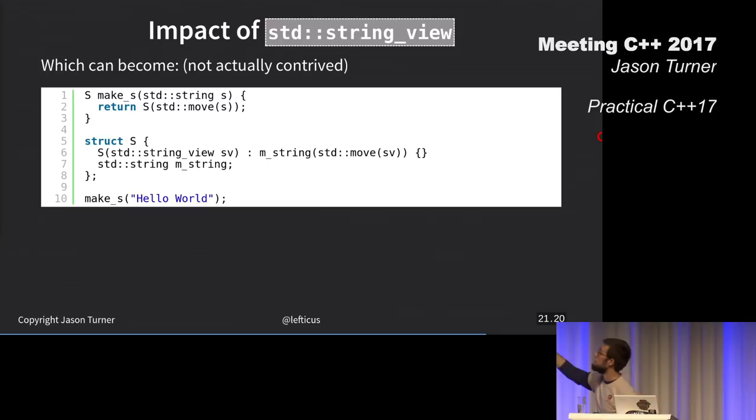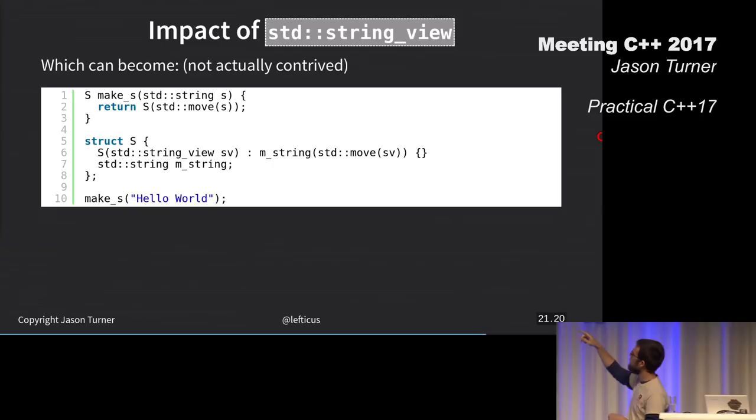Don't do this. I have my factory function called make s. It takes a string. I'm moving that into my struct, which is a string view. So it is creating the string view. And then I am moving that into my string. I've done how many string creations here? Like four or five or something, potentially three or four.